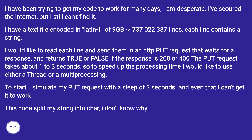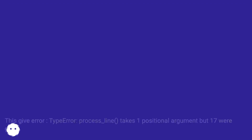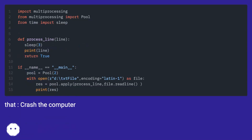The PUT request takes about one to three seconds, so to speed up the processing time I would like to use either a thread or multi-processing. To start, I simulate my PUT request with a sleep of three seconds, but I can't get it to work. The code splits my string into characters, and gives the error: TypeError — process_line takes one positional argument but 17 were given — and that crashed the computer.